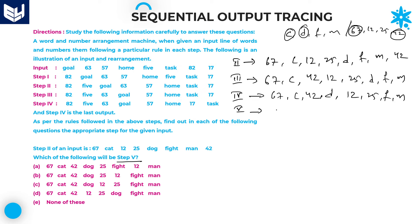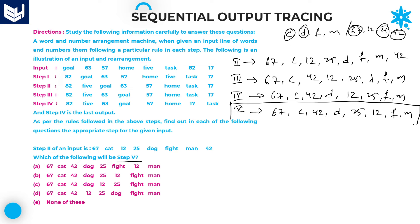In step 4: 67, C, 42, and the next letter in alphabetical order is D. So: 67, C, 42, D. Remaining: 12, 25, F, M. In step 5 — which is our required answer: 67, C, 42, D, and the third highest number is 25. So: 67, C, 42, D, 25, and remaining 12, F, M. Checking the options: option B shows 67, cat, 42, dog, 25, fight, man — this matches our answer. Option B is the right answer.